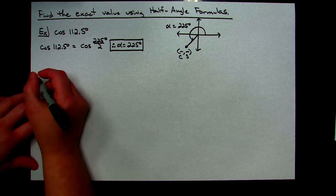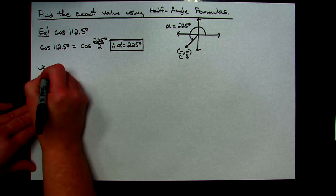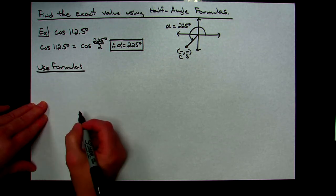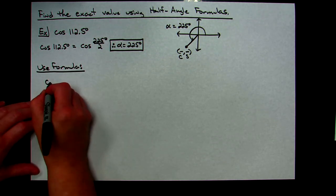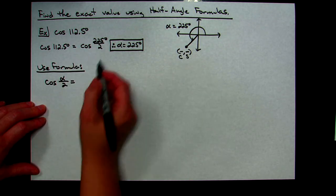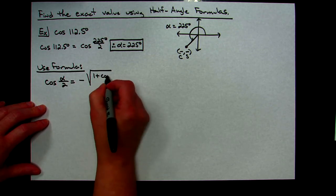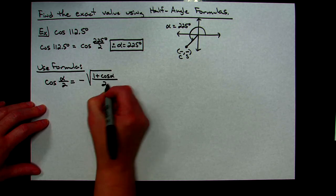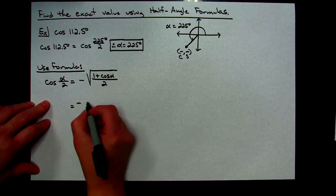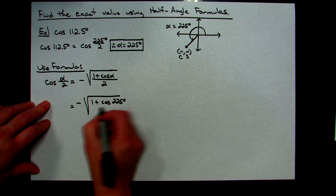Now that we've determined alpha and the quadrant, we're ready to use the formula. We'll plug everything in and simplify arithmetically. Rewriting the formula: cosine(α/2) = negative square root of (1 + cosine α) all over 2. We've determined it's negative due to the quadrant. Plugging in 225°: negative square root of (1 + cosine 225°) all over 2.